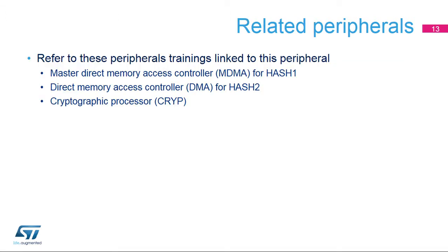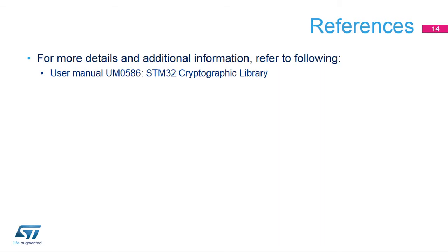This is a list of peripherals related to the hash processor. Refer to the training on the DMA peripheral for information on how to configure the hash channel. Please refer to Crypto Training if you want to know more about cryptographic engines. For more details, please refer to the user manual available on our website.